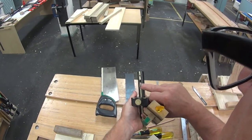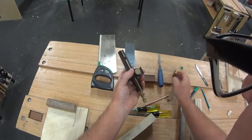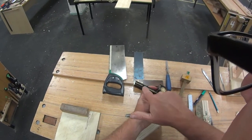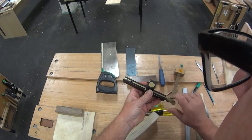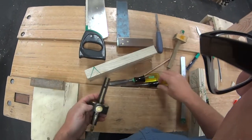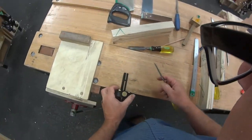The mortise gauge has two pins on the far side. Some of them have a wind here to change the opening of that, the distance between those two pins. Others have just got a slide. Whichever one you get, they both work the same.